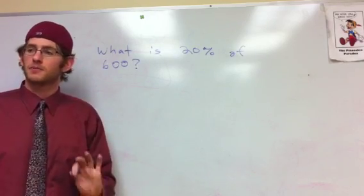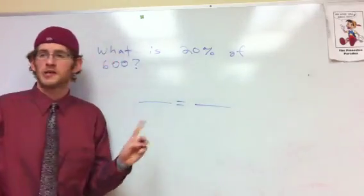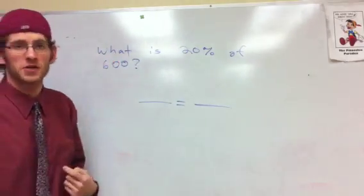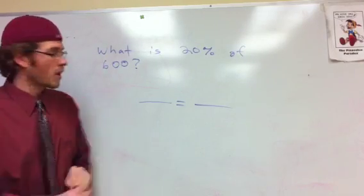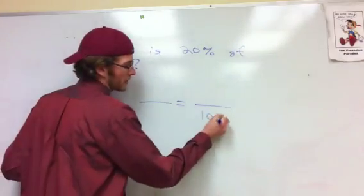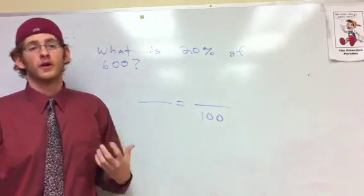Every percent proportion problem you may start with this. Two dashes and an equal sign. What's the first piece of information that we can put into this? 100 goes at the bottom right. Every time we're setting up a problem like this, 100 goes in the bottom right no matter what.